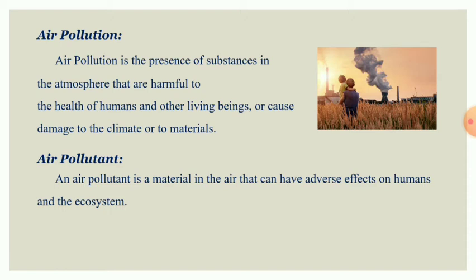An air pollutant is a material in the air that can have adverse effects on humans and the ecosystem. The two types of air pollutants are: primary pollutants, which enter the atmosphere directly, and secondary pollutants, which are those formed due to chemical reactions. The common air pollutants are ozone, nitrogen dioxide, carbon monoxide, and sulfur dioxide.